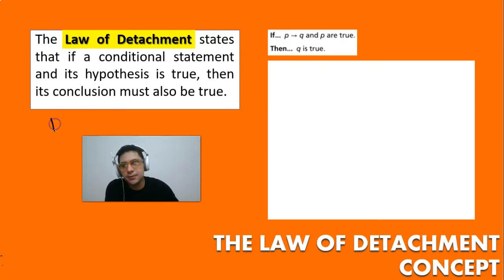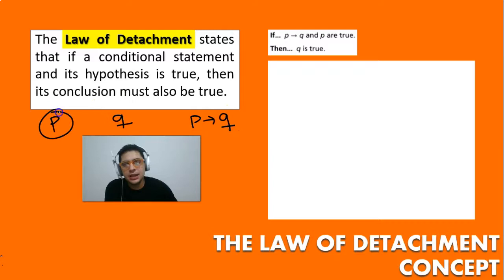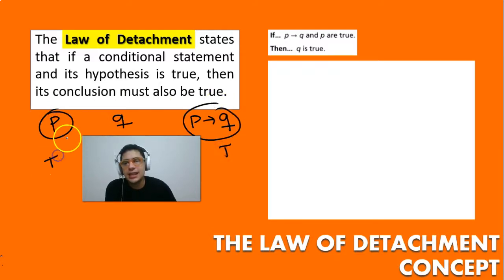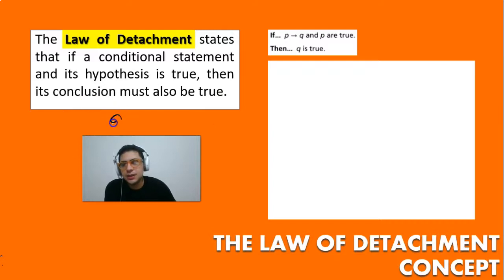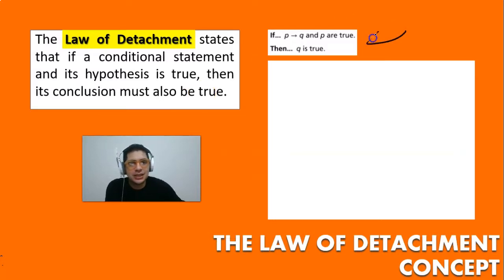So we have p and we have q, and we have p then q. If we assume that p and p→q are both true, then according to the law of detachment, q — the conclusion — is going to be true. The formula: if p then q, and p is true, then q is true.